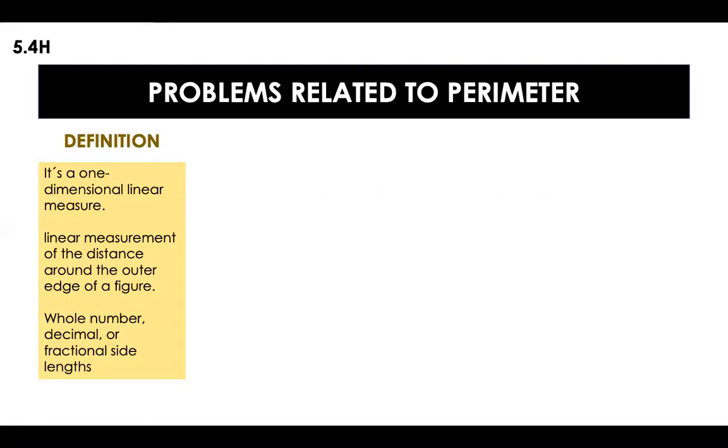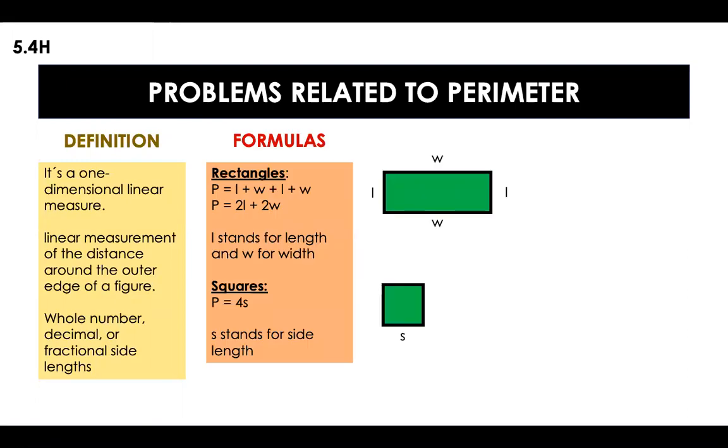Everything that we need to know about perimeter is that it's a one-dimensional linear measure, and it's whenever you're talking about the distance around the outer edge of a figure. So here are the formulas. We're not going to talk about them right now. We're going to be talking about them throughout the lesson. And of course, I'm going to give you this at the end of the lesson so you can take some pictures or take some notes about it.